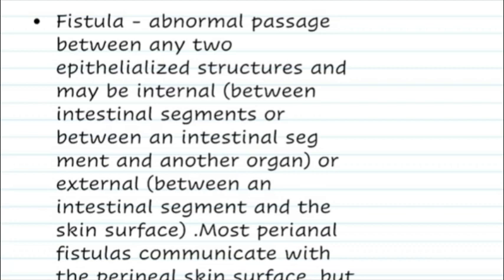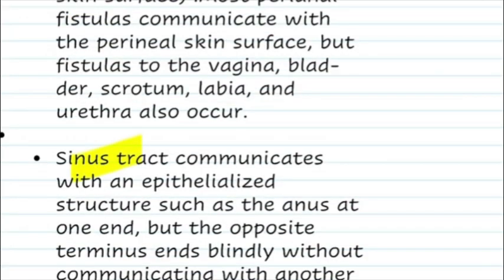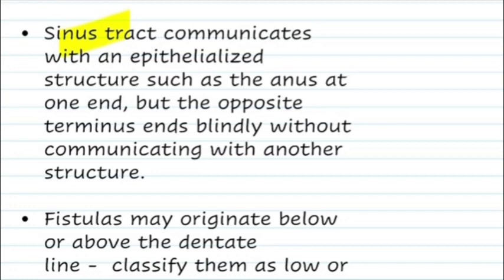We already have discussed the difference between the fistula and the sinus tract. A fistula is an abnormal passage between any two epithelized structures — for example, between the anal canal and the exterior perianal skin, or between the anal canal and the vagina. A sinus tract communicates with an epithelized structure such as the anus at one end, but the opposite terminus ends blindly without communicating with another structure.